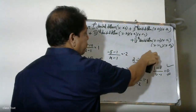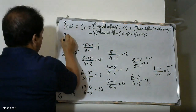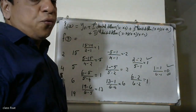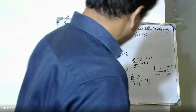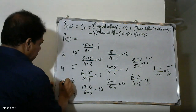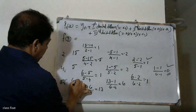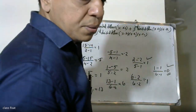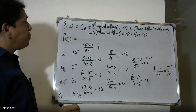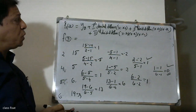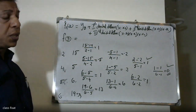I will show you the values: x0, x1, x2, x3, x4, and corresponding y0, y1, y2, y3, y4. So on a formal way, P(x) equals y0 plus first divided difference into (x minus x0), plus second divided difference into (x minus x0)(x minus x1), plus third divided difference into (x minus x0)(x minus x1)(x minus x2). We formulate and substitute.